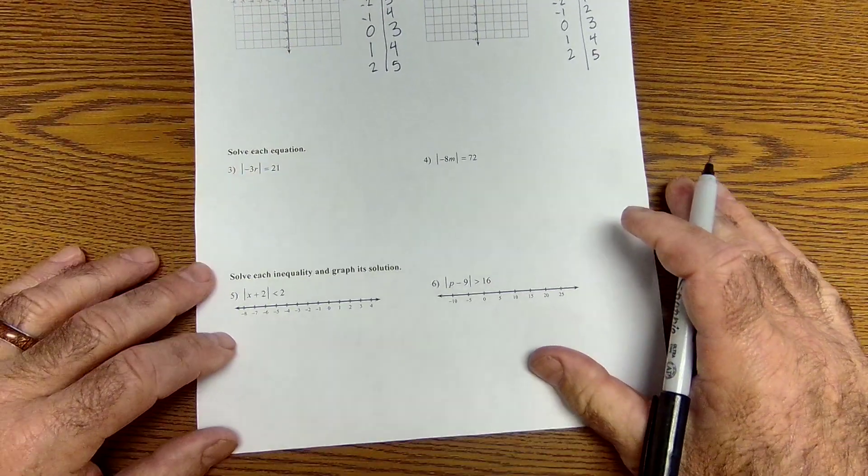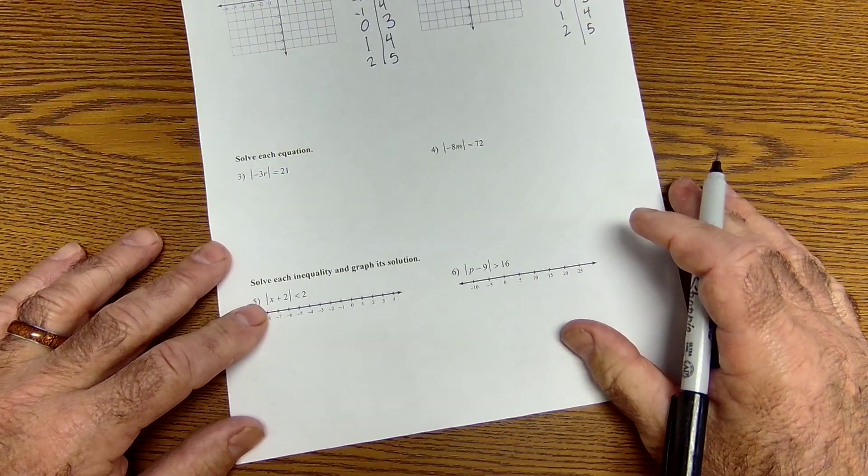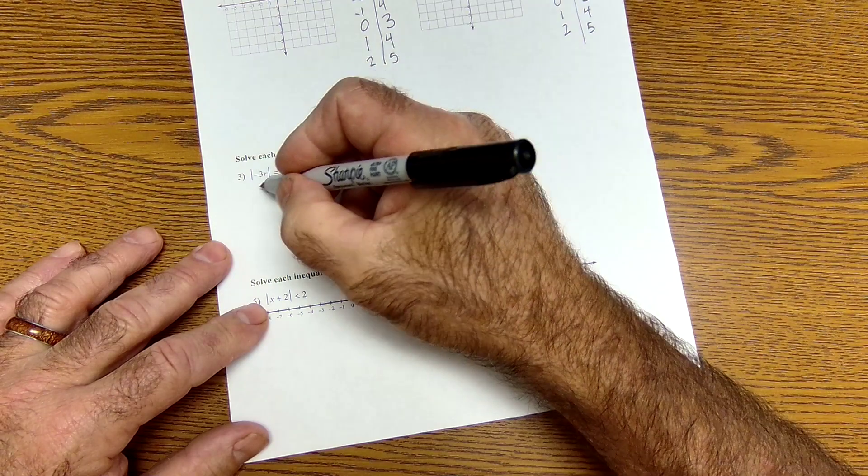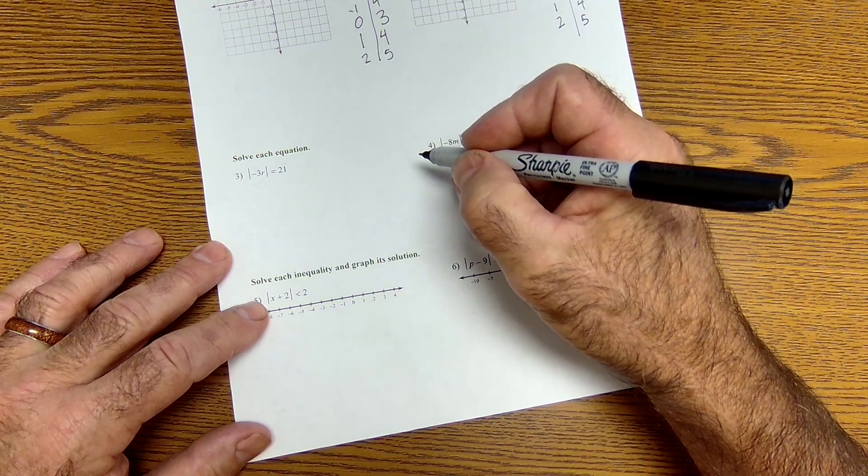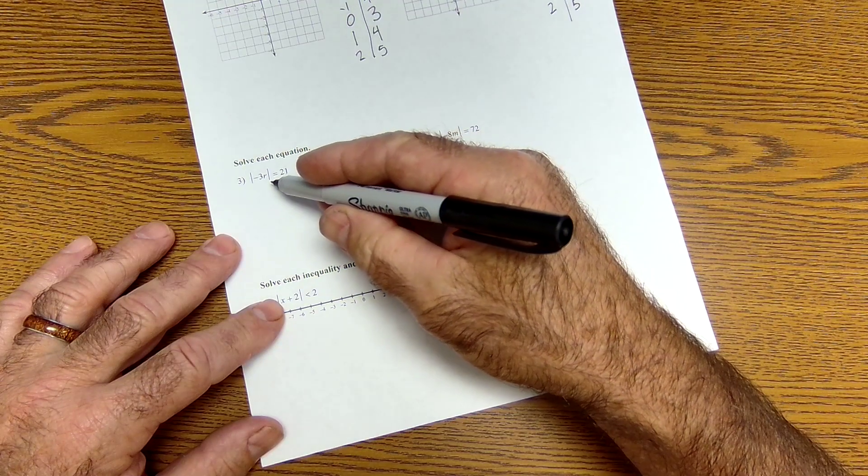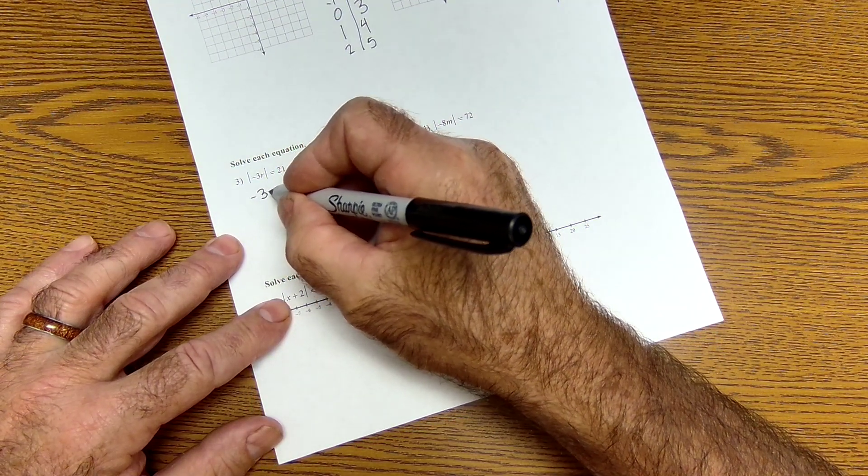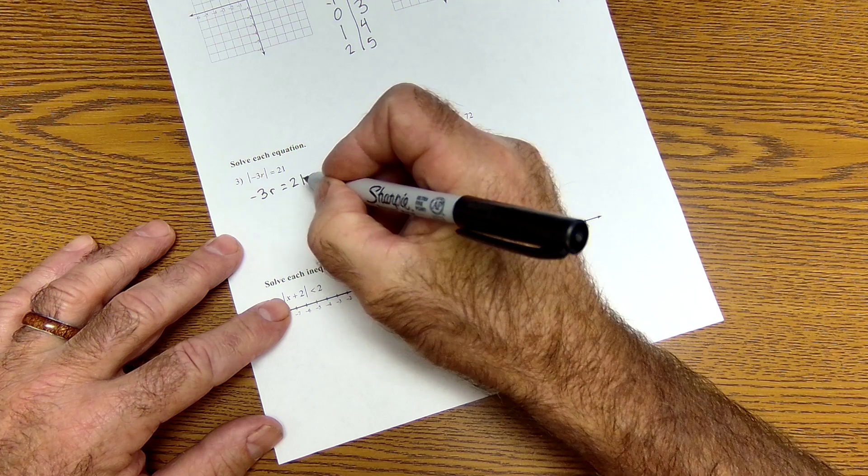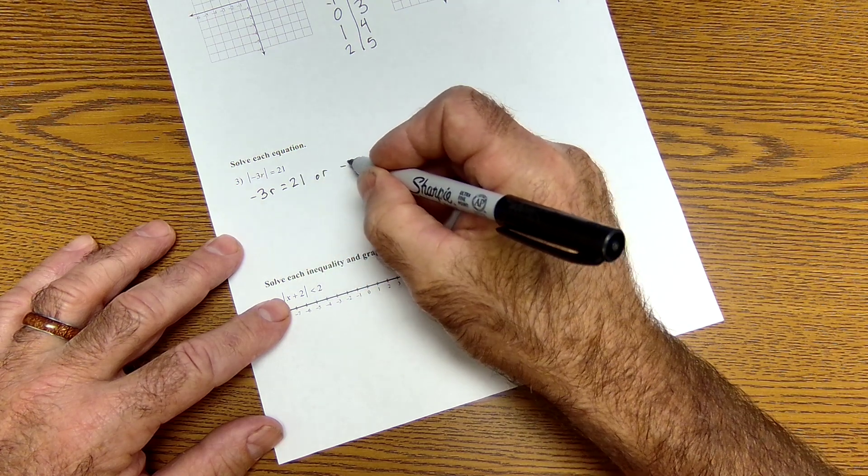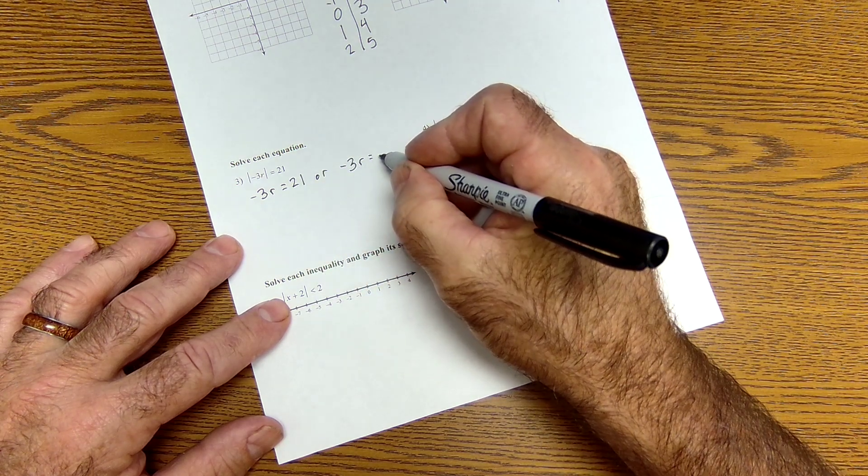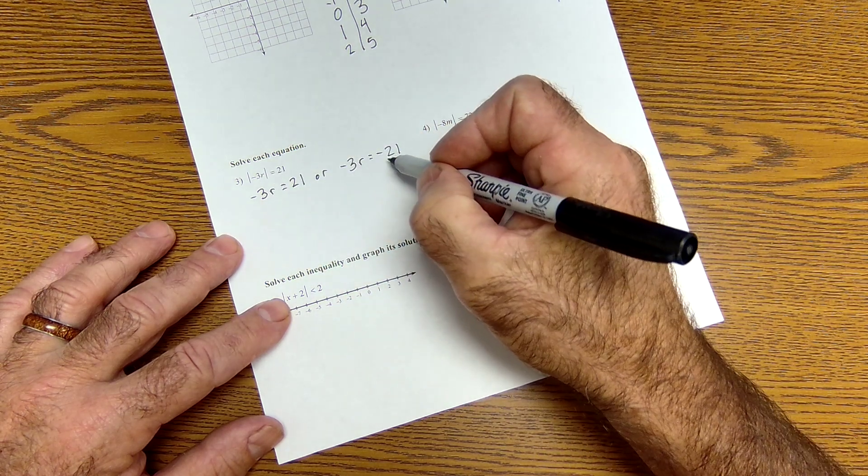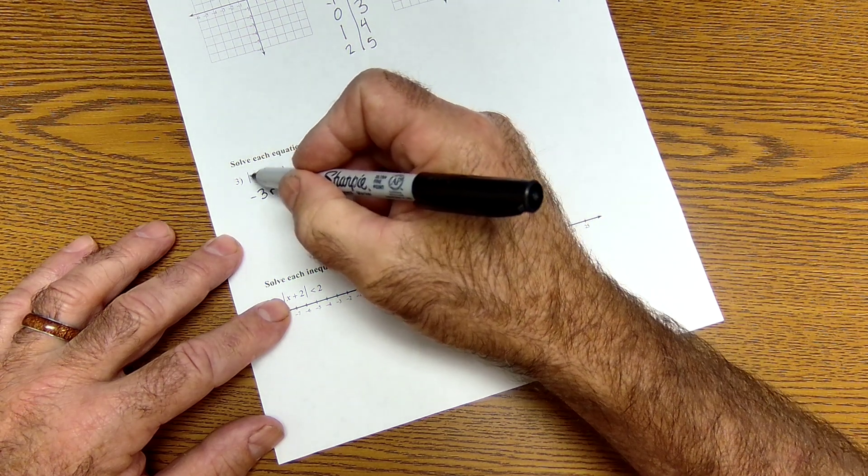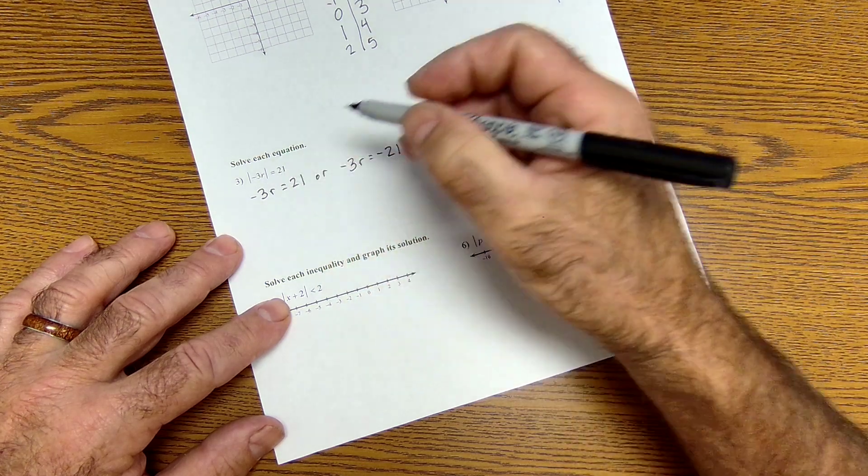All right. Let's move down to solving equations. So what I'm saying here is everything in here could either be positive or it could all be negative. So there's actually two equations here. Negative 3r could be equal to 21 or negative 3r could be equal to negative 21.